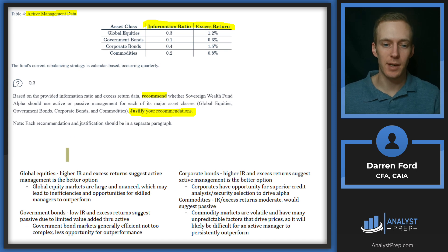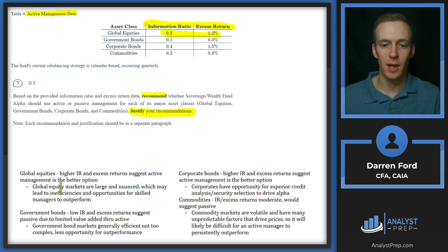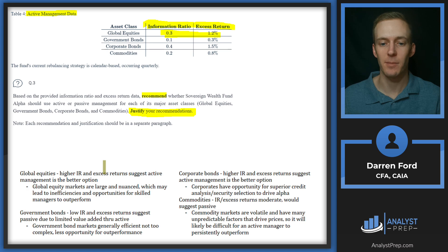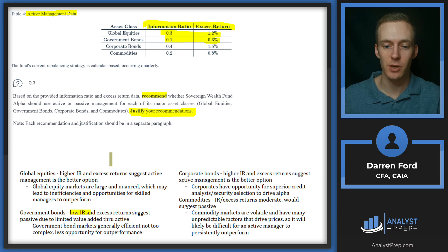Global equities: the higher information ratio of 0.3 and excess returns of 1.2% suggest active management is the better option. Looking more qualitatively, global equity markets are large and nuanced, which may lead to inefficiencies and opportunities for skilled managers to outperform. There's wide dispersion in different types of companies and stocks, which leads to the opportunity for active managers to avoid bad companies, pick good companies, and outperform over time. Government bonds: low information ratio of 0.1 and low excess returns suggest passive management, due to limited value added through active management.